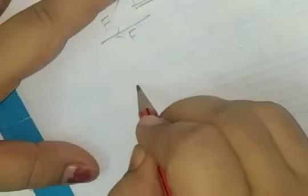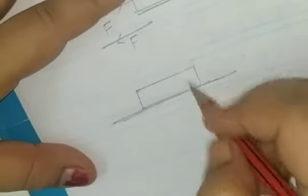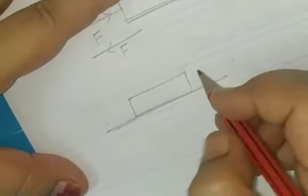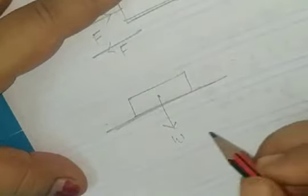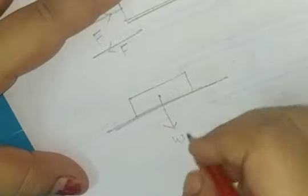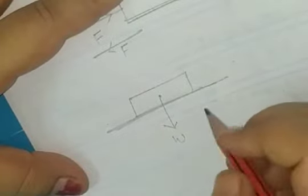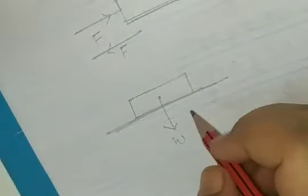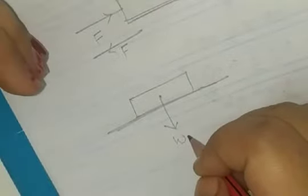There are various simple examples which you might have experienced. Whenever there is a book — say this is an object kept on a table — will it fall down? No. But its weight is acting downwards. This is the weight W and it is acting downwards. So why is it not falling down? Because something is balancing this force. Weight is a force, so some force must be balancing this force which is acting downwards.